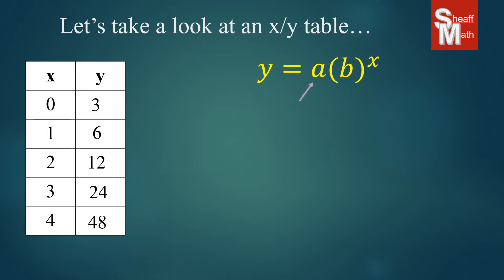The a represents the zero term, or the y-intercept, and the b represents the common ratio, or the number that seems to be multiplying each time on the y side of the table. The y and the x remain. Those are the ones we need in our equation.